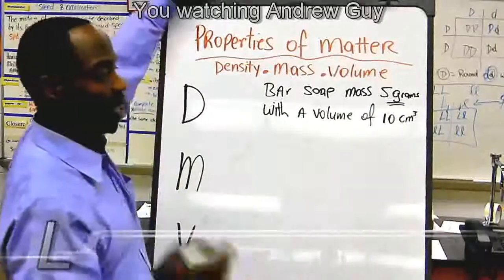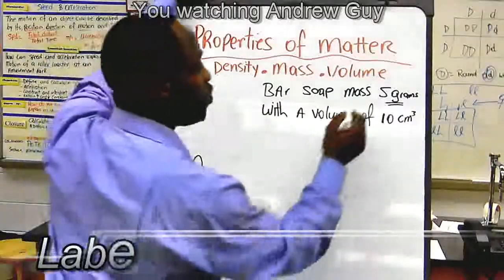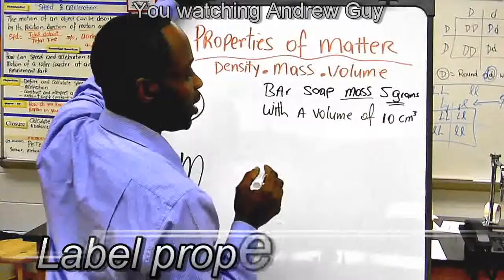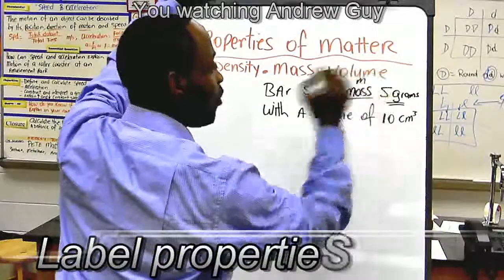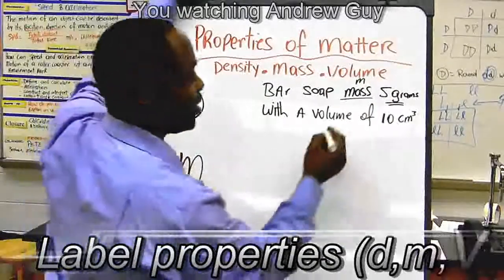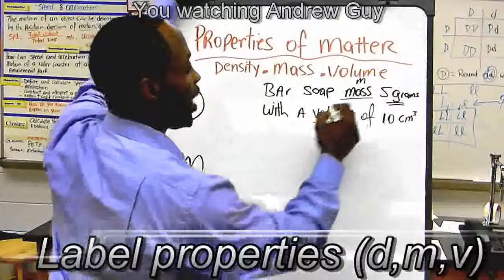Now, how do we set up our equation? Here's the trick. Whenever you see the word mass in a question, you always go ahead and label it. I put my M right over there, because I know that I have that. Then I see the word volume, great, I go ahead and put a V.